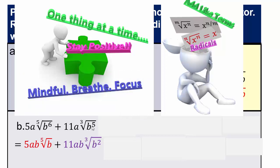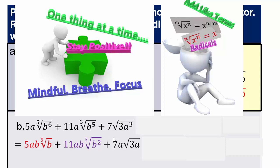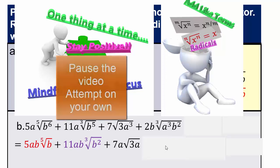Let's see if you can complete 7 times the square root of 3a to the third. The square root of 3 we can't simplify, but the square root of a to the third we can. A to the third — the square root of a squared is a. So it will be 7a, with one more a left inside. One term at a time — not to panic, stay positive. Pause the video and see if you can do this part.